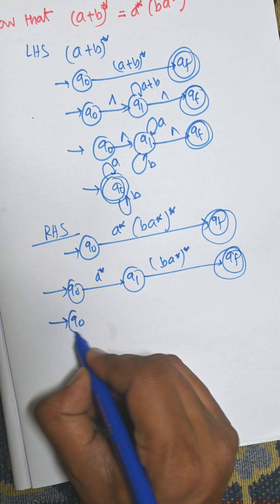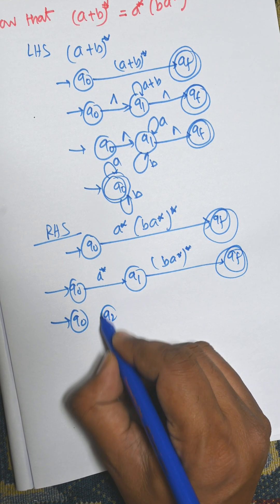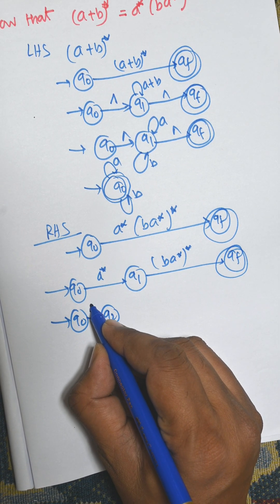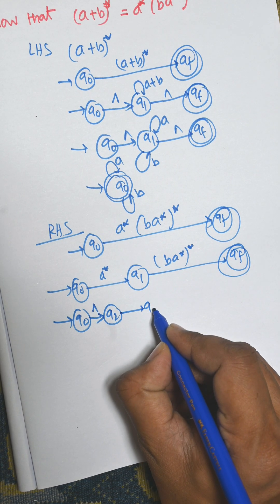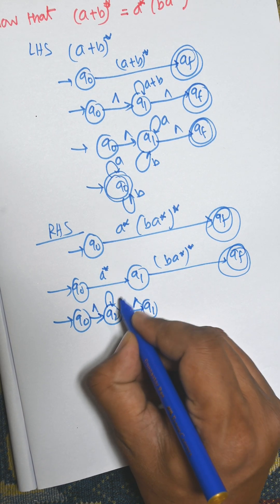For a* there is another input state that is q2. From q0 to q2 there is an empty symbol. From q2 to q1 there is another empty symbol. A will rotate again and again.